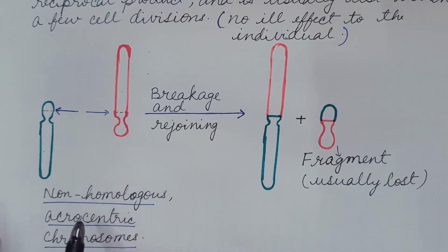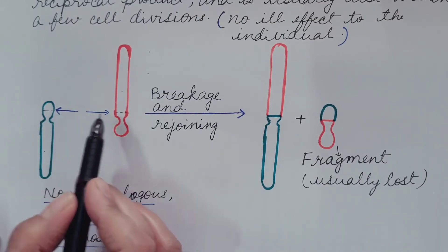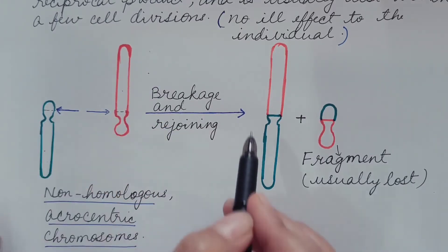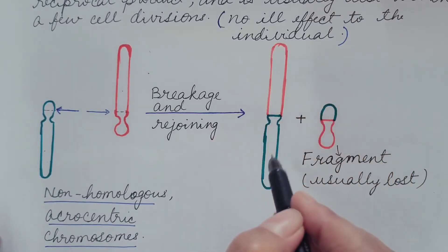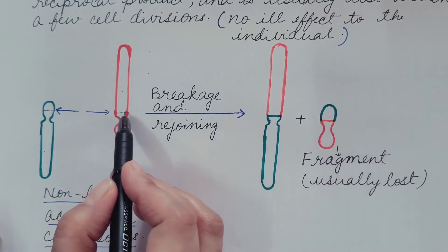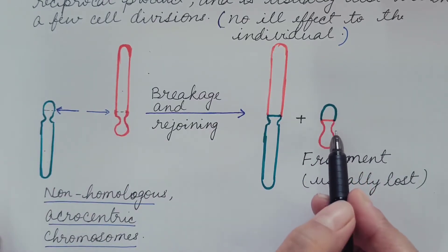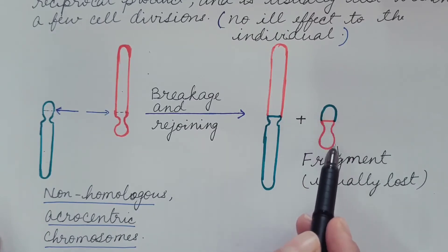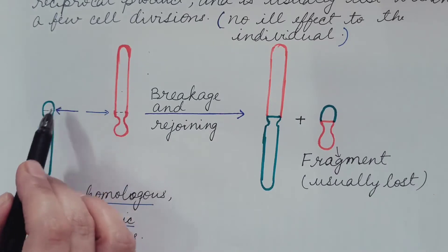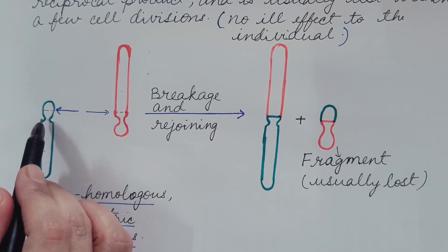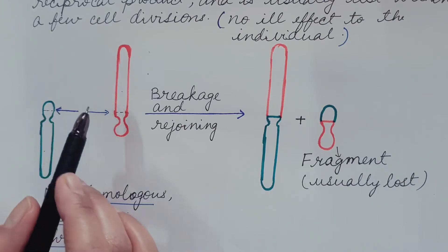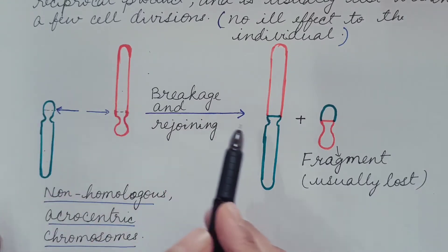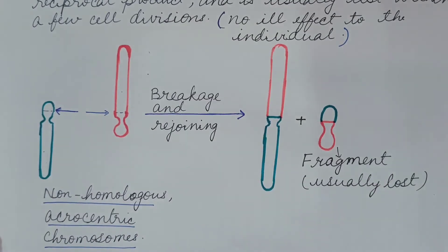Let us understand this with a diagram. These are the two non-homologous acrocentric chromosomes. This chromosome breaks at one point and this chromosome breaks at another point. The long arm and the long arm with the centromere fuse and behave as a single chromosome with a centromere. The two short fragments also join but are gradually lost. So a fragment of one acrocentric chromosome is exchanged for fragments of the other — it is an example of reciprocal translocation.